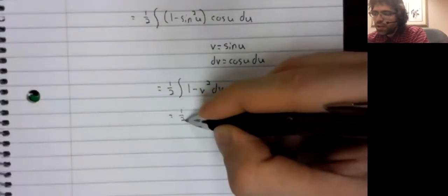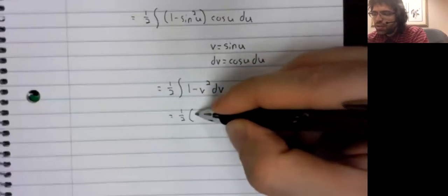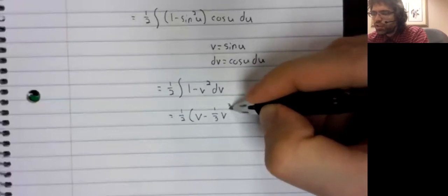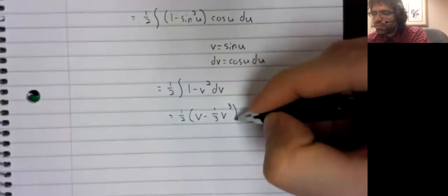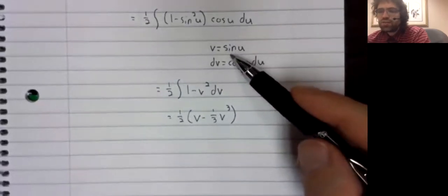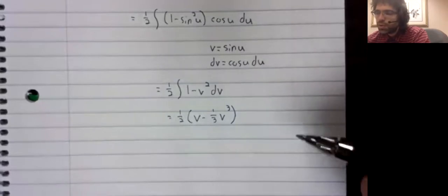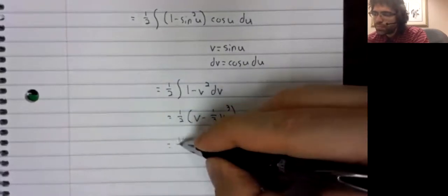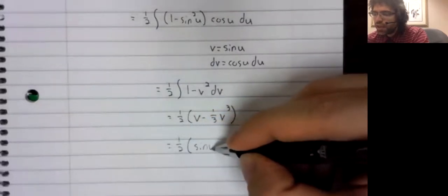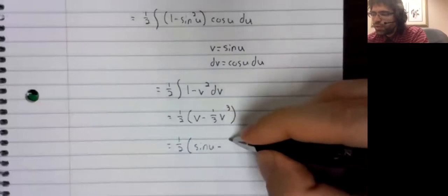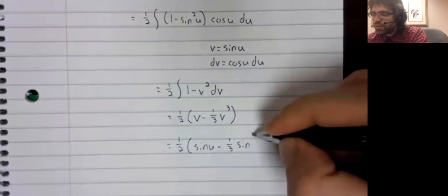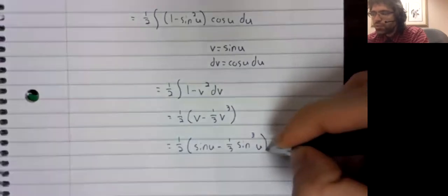This is one half the integral of one minus v squared dv. So one half times v minus one third v cubed. Let's see. v is the sine of u. So the sine of u minus one third the sine of u cubed.